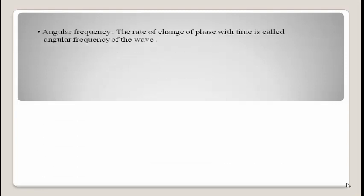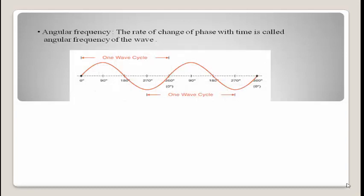The next term is angular frequency. Angular frequency is the rate of change of phase with time. As seen in the diagram, the dotted lines represent the line of zero disturbance, or mean position, or equilibrium position. Within one wave, angles are marked as 0°, 90°, 180°, 270°, and 360°.